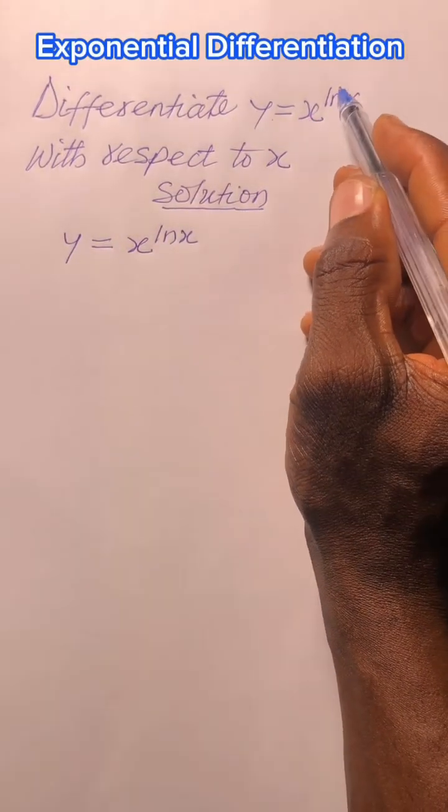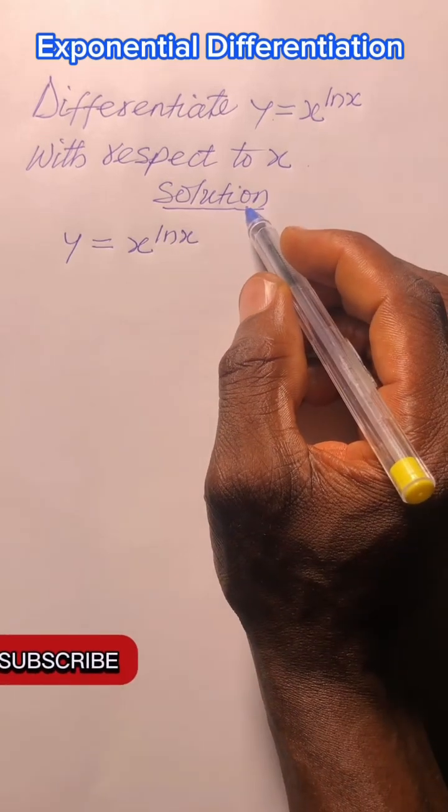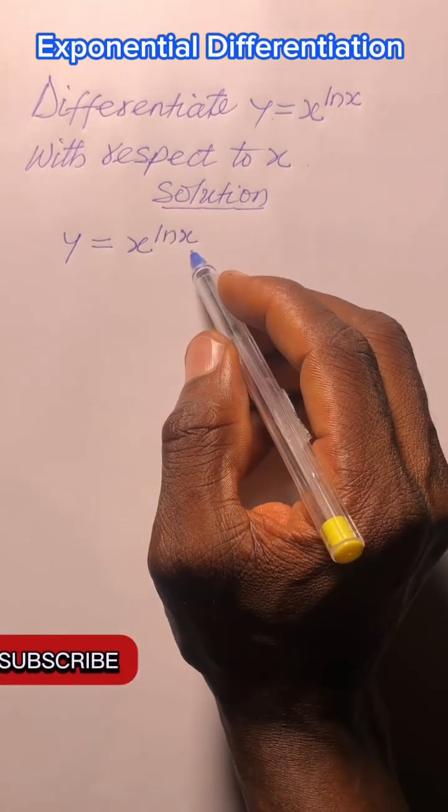Differentiate y = x^(ln x) with respect to x. Solution. This is an exponential differentiation.